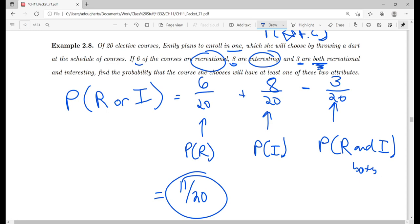There's an 11 out of 20 chance that she hits a course that's either recreational or interesting. And so if she's hoping to get one of those, that's a pretty good probability. That's over 50%. She's more than likely to get a course that's either recreational or interesting.